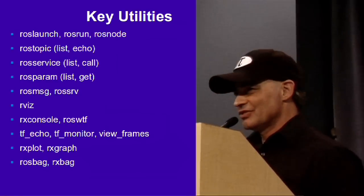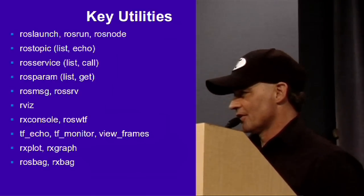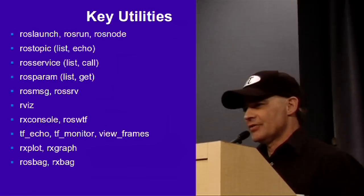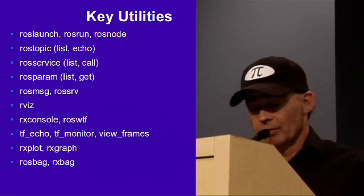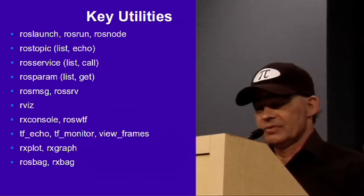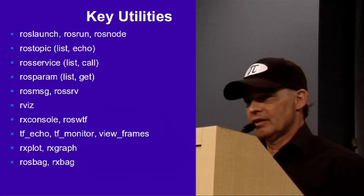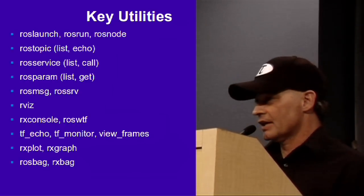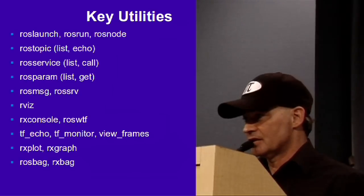I'll just name some of these - it's just name recognition, so if you see them once here you'll see them again on the ROS.org site. ROS comes with a bunch of really nice command line utilities: roslaunch, rosrun, and rosnode. Roslaunch is the way you keep track of all these nodes that are independently and asynchronously commanding your robot. The answer is a launch file - a simple little text file with one line typically for each node you want to run. ROS topic lets you list all the topics your various nodes are publishing messages on, and you can echo the values of those messages at any time - it's a really good debugging tool.